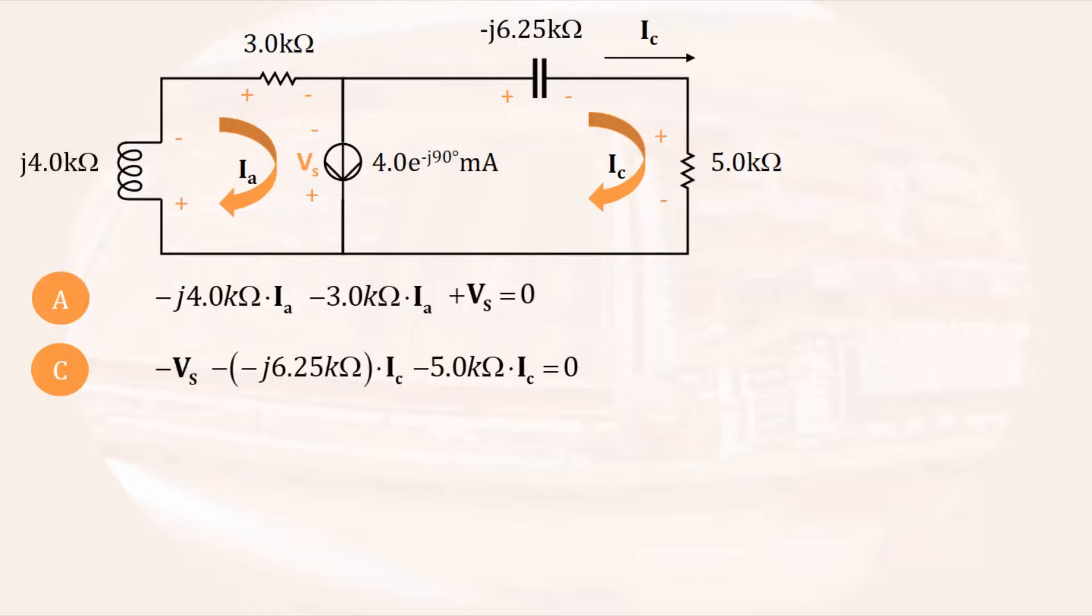The current source in this problem is on an inner loop. That means it defines a relationship between two mesh currents. In this case, the current Ia goes in the same direction as the current source, and the current Ic opposes the current source. So we can write Ia minus Ic is equal to the value of the current source.